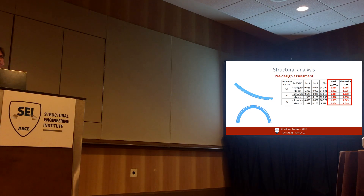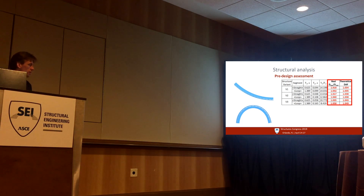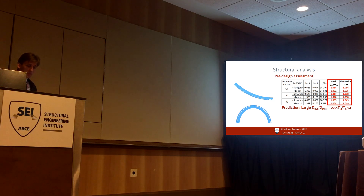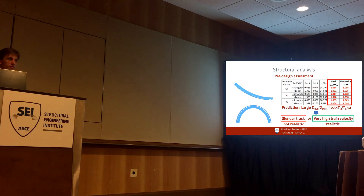One should ask: for which roller coasters would the dynamic amplification factor be large — i.e., which would be susceptible to dynamic effects of a moving train? Using formulas from structural dynamics theory, we can say it will occur when this value falls between 0.5 and 2. That means either the roller coaster has a very slender track or a very high train velocity. The first is not realistic since such a roller coaster would probably not satisfy stability limits, but the other is very real — there are roller coasters with speeds of 240 km/h, in Dubai for example.